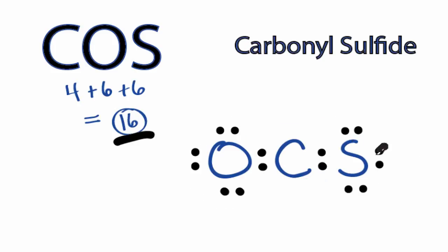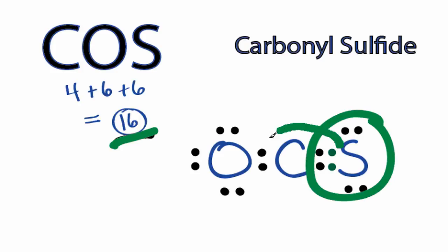To solve this problem, we can take 2 valence electrons here from the sulfur and move them inside to form a double bond. Again, we're still using 16 valence electrons, but now we have 8 valence electrons here on the sulfur, and the carbon has 6, so we're getting closer.